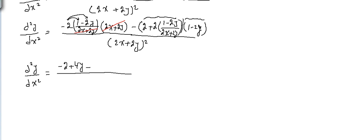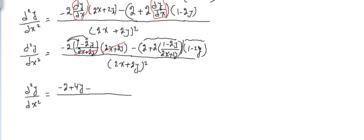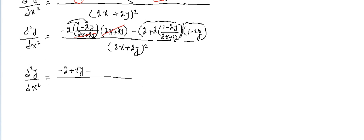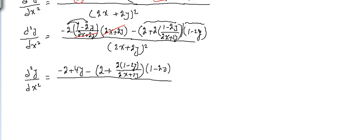Let me check — yes, this factor multiplied with this factor. Let's find the easiest way to do it. Minus 2 plus 2 times (1 - 2y) over 2x plus 2y, multiplied with (1 - 2y). I can simplify (2x + 2y) with 2, but I'll rather leave it like this on purpose — you will see why.